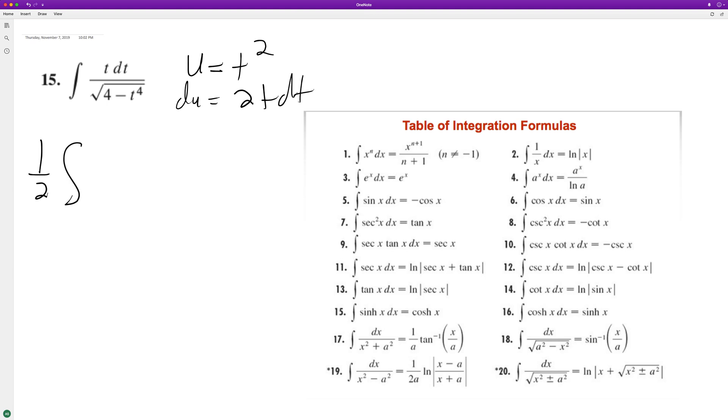So then we'll just substitute. We'll put a one-half here, and then we're integrating du over the square root of 4 minus u squared.